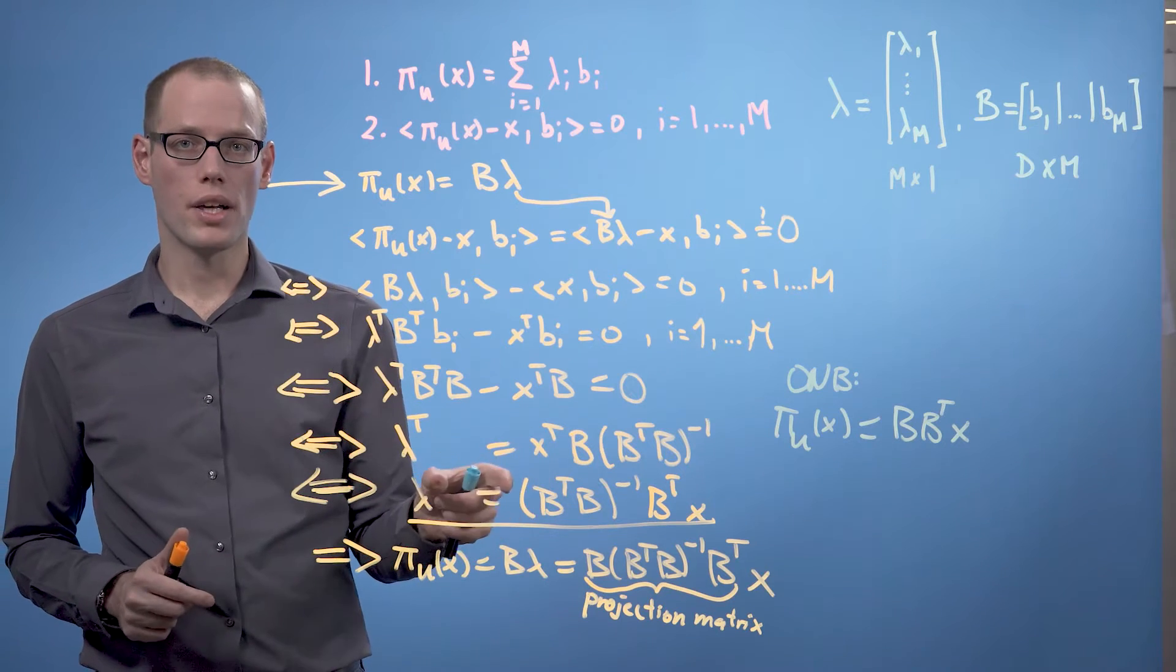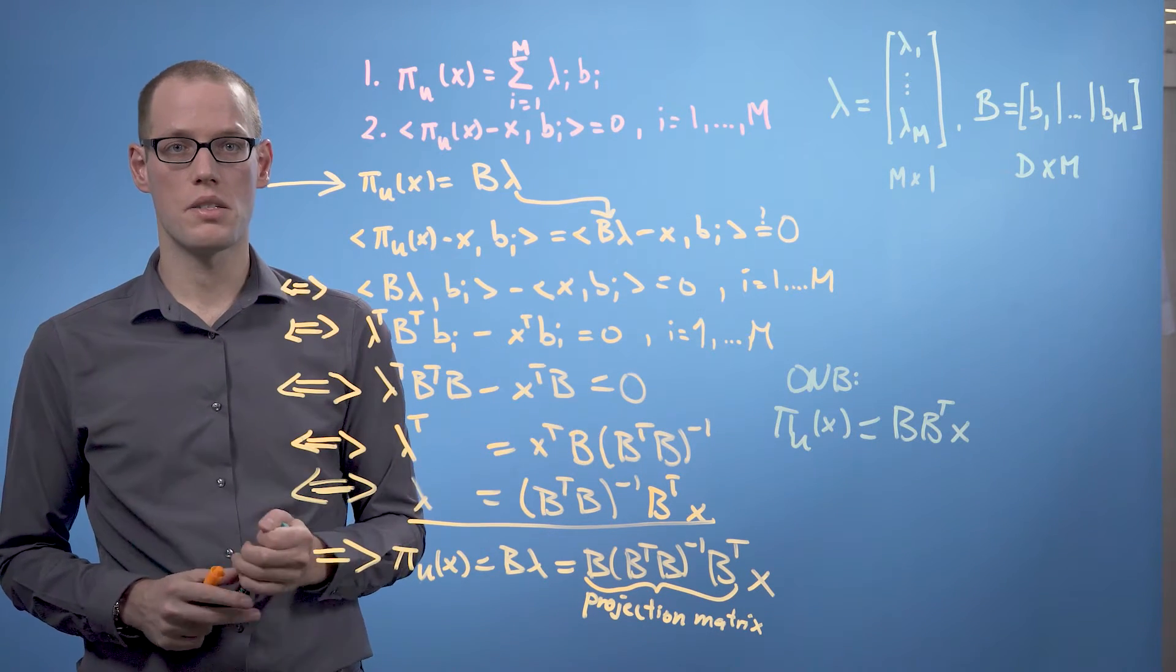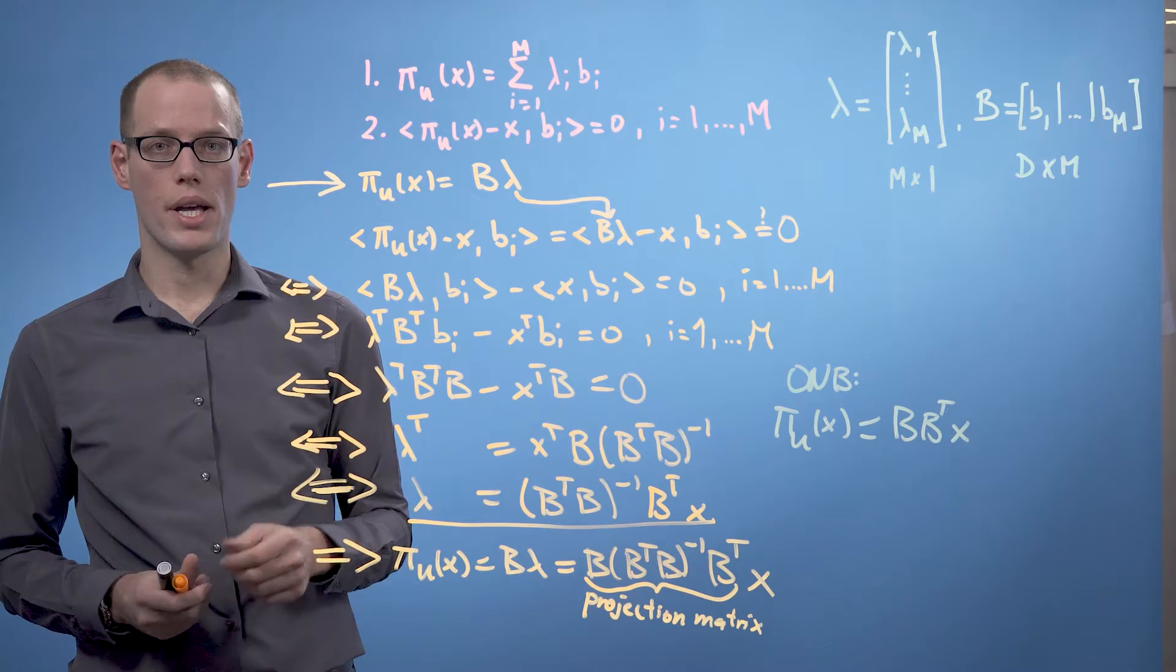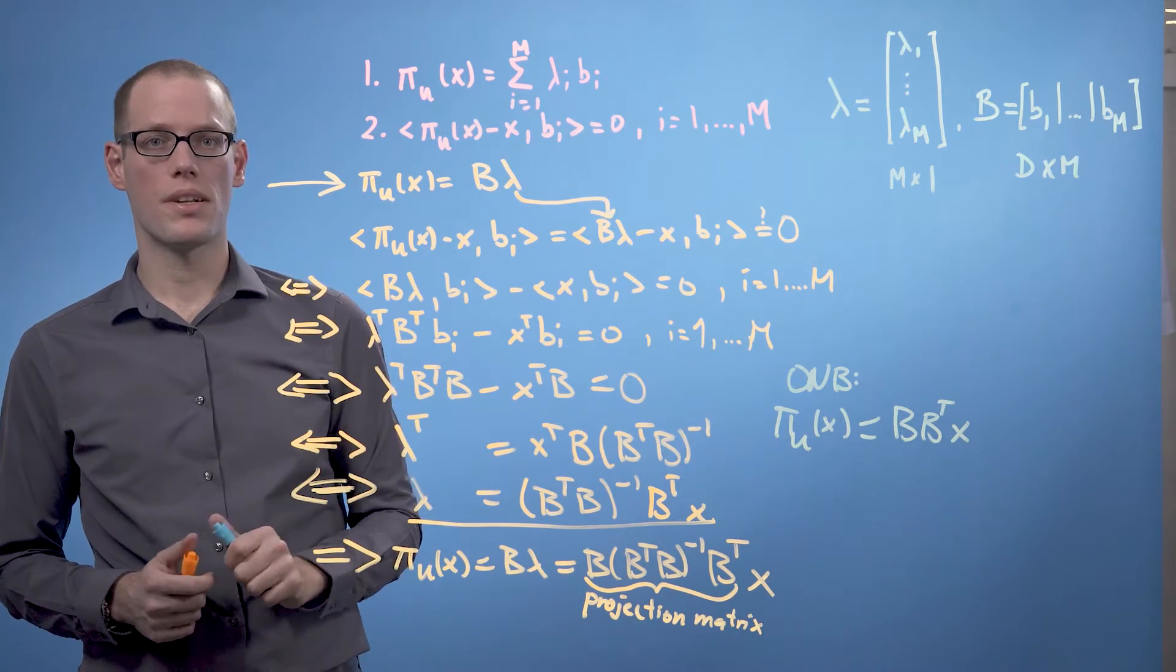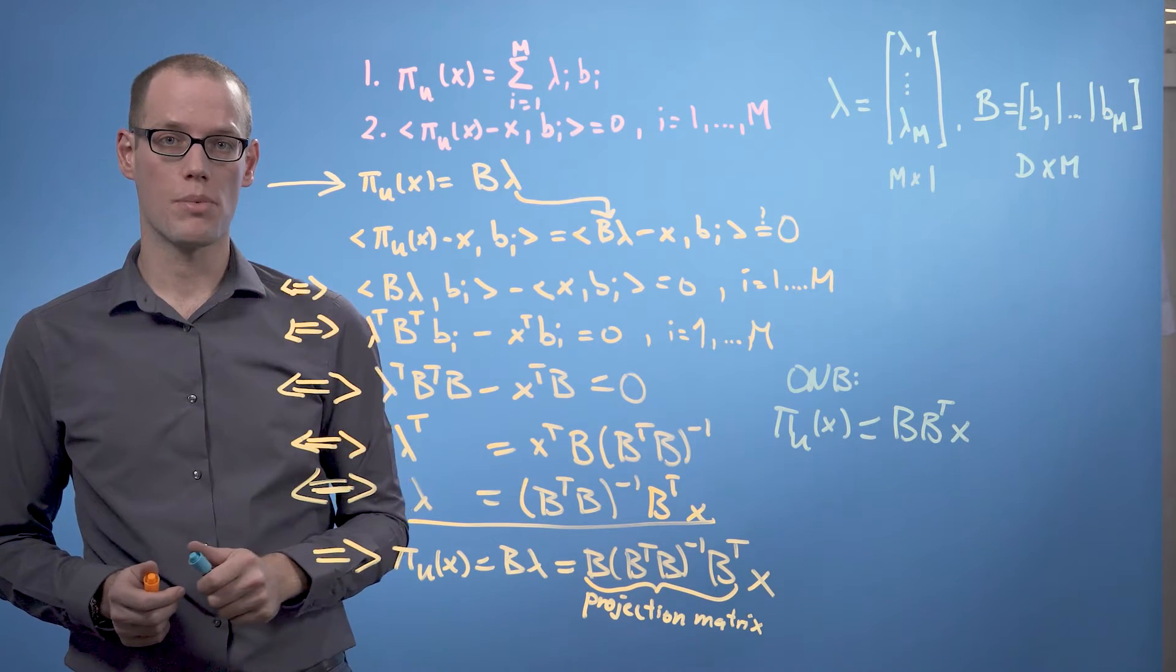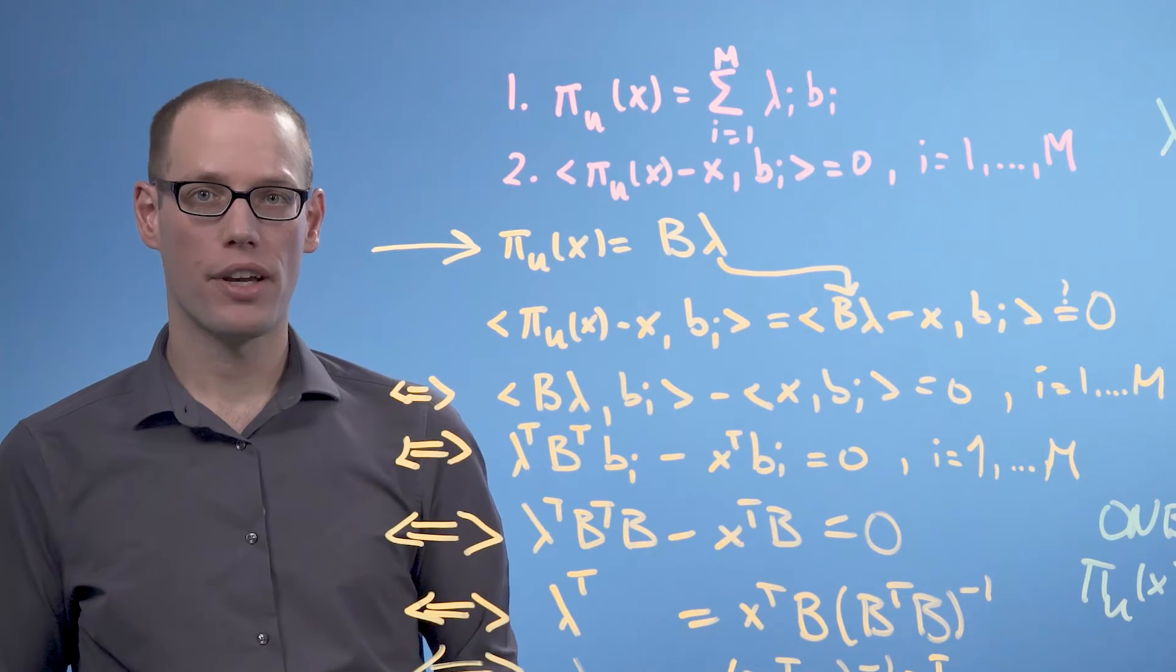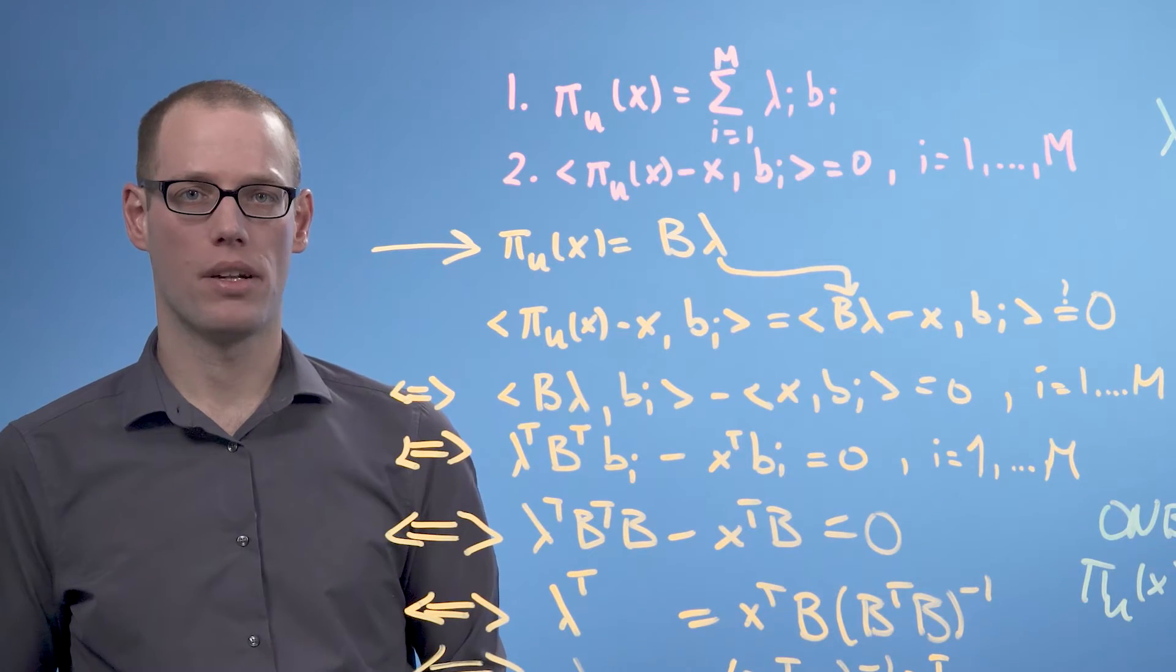The projected vector π_u(x) is still a vector in R^d. But we only require m coordinates, the λ vector over here, to represent it as a linear combination of the basis vectors of the subspace u. We also effectively got the same result as in the one-dimensional case.